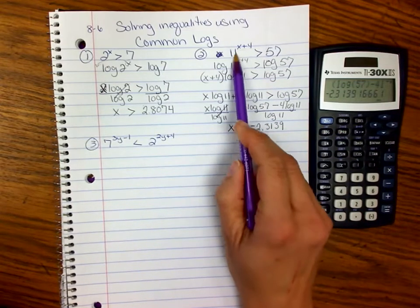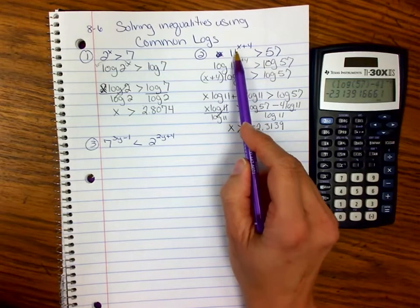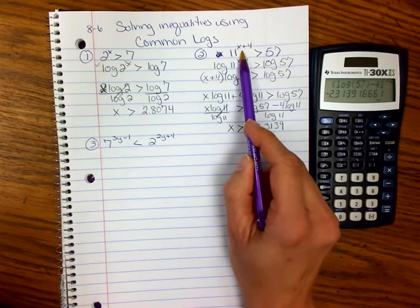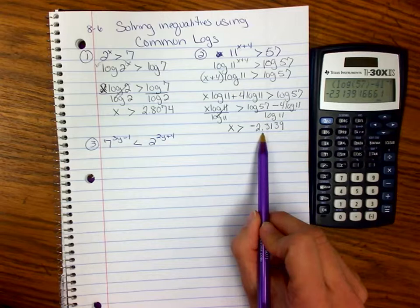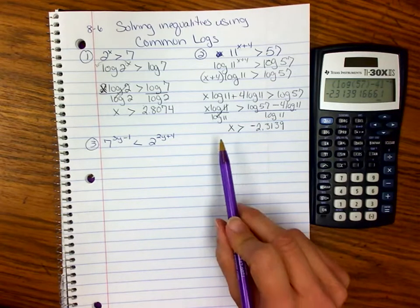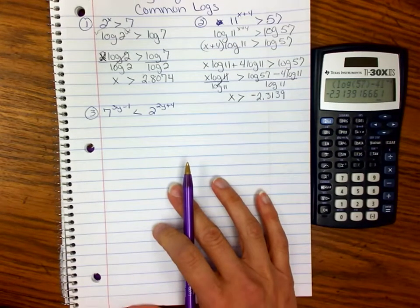We know that 11 to the first power is 11, and 11 to the second power is 121. So we expect this expression to be between 1 and 2. And if we subtract a negative 2-point-something from that, we will get that. So you could check it if you wanted to. That's what we expect it to be if we do that little guesswork ahead of time.